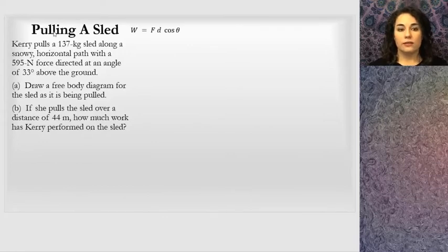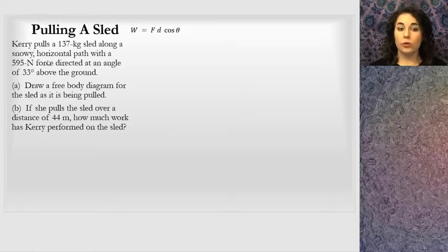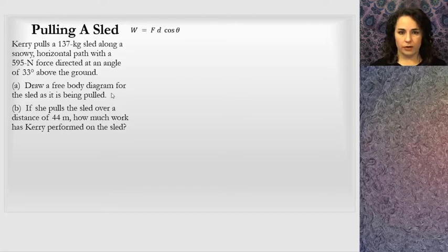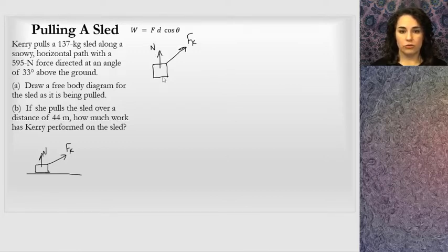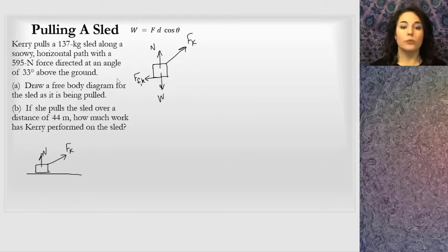I chose the pulling-the-sled problem as a simple example to get an idea of how to use the work equation. Carrie is pulling a sled along a snowy horizontal path with a 595-Newton force directed at an angle above the ground. The problem says to draw a free body diagram for the sled as it's being pulled. Here's a sketch of the sled with Carrie pulling it — I'll call that F-Carrie. There's a normal force, a weight, and I'll include a friction force since in real life there's friction between an object and the snow, even though I don't know its value.